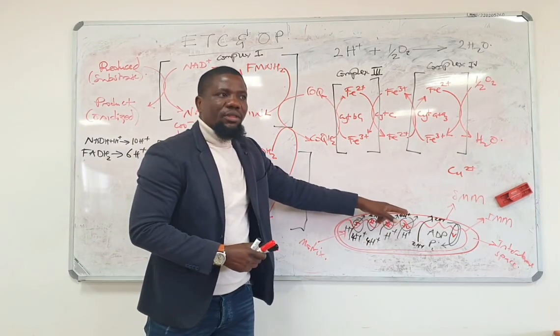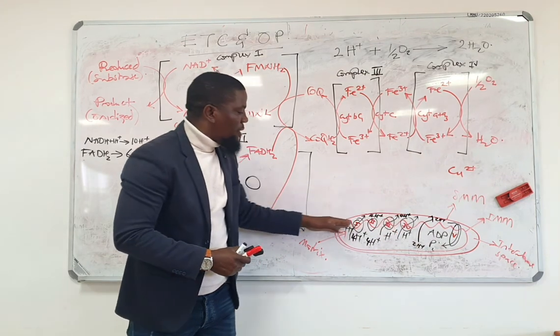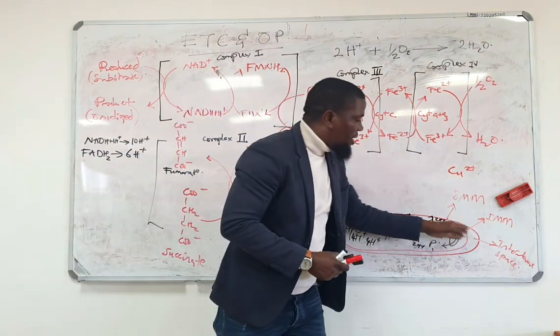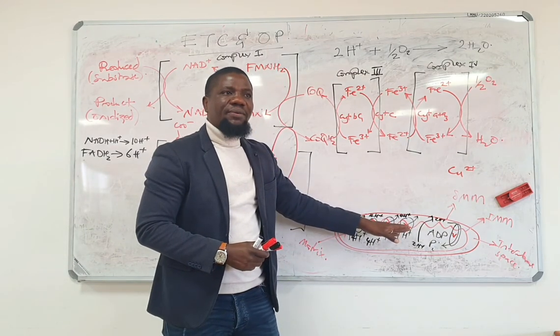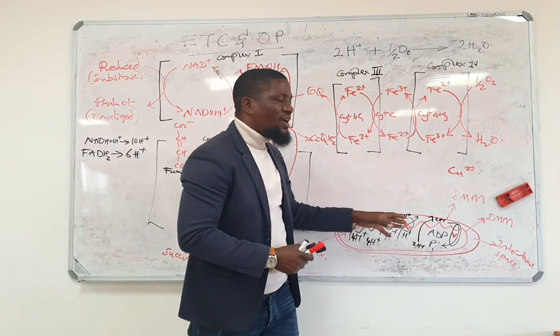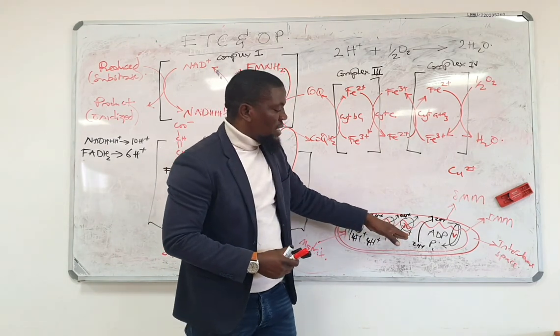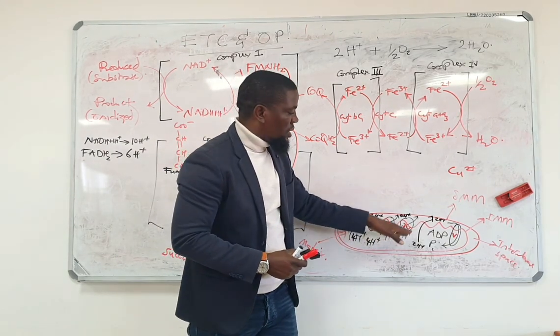That clear? So you will have so many protons in the intermembrane space than in the matrix. The result is that there will be a change in the gradient. Why? Because the matrix is actually going to have less protons.